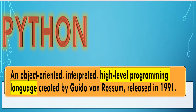First, it is much easier to program in a high-level language. Programs written in a high-level language take less time to write; they are shorter, easier to read, and more likely to be correct. Second, high-level languages are portable, meaning they can run on different kinds of computers with few or no modifications. Low-level programs can run on only one kind of computer and have to be rewritten to run on another. Due to these disadvantages, almost all programs are written in high-level languages; low-level languages are used only for a few specialized applications.